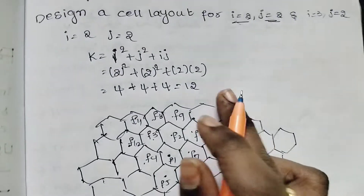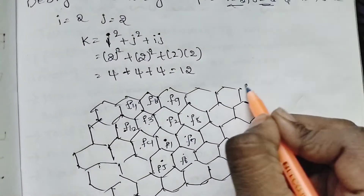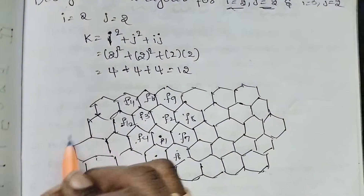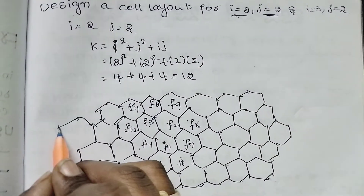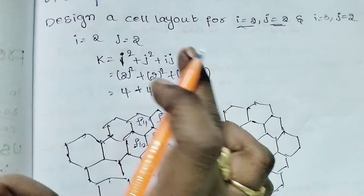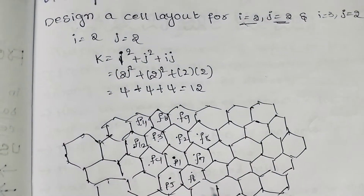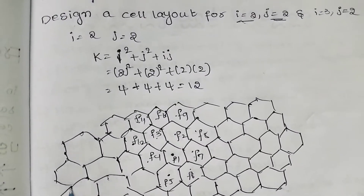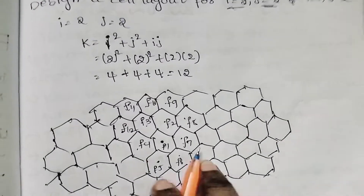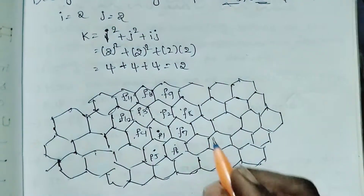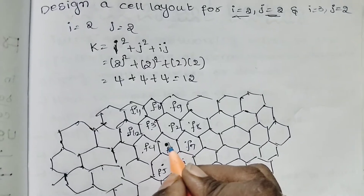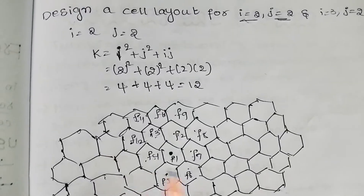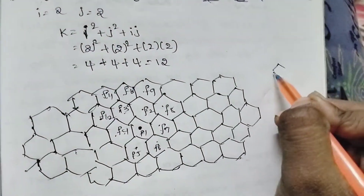For the representation, we can see these 12 cells and we count the 12 cells for understanding purposes. Here we can draw the cells. We can see i equals 2, j equals 2. There are 6 sides in a hexagonal cell — 1, 2, 3, 4, 5, 6.